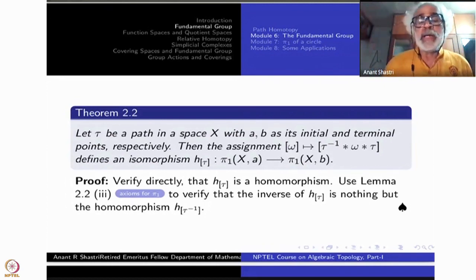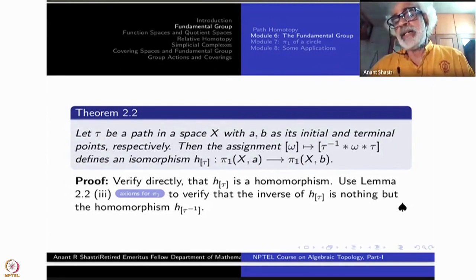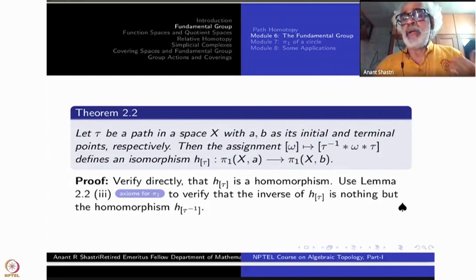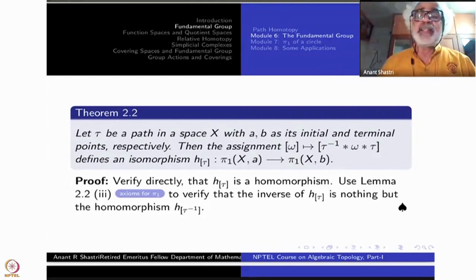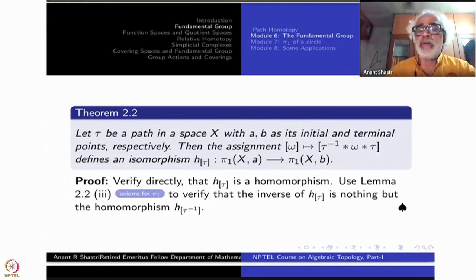We have proved that changing the base point changes the group by an isomorphism. If what we are interested in is the isomorphism class of the group, then there is no problem. It should be noted that isomorphic groups are not necessarily the same — like two equilateral triangles of the same side length are different triangles but isometric as geometric objects.